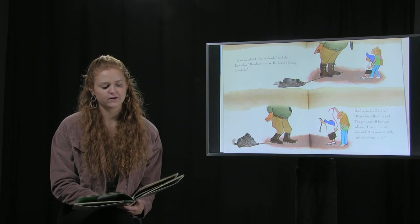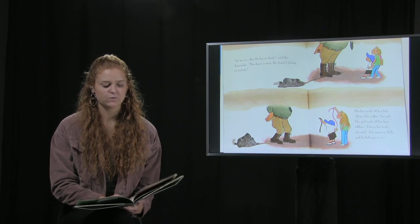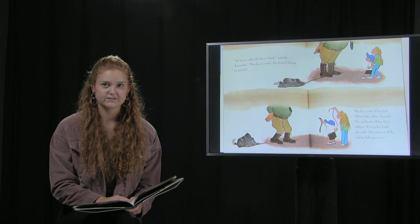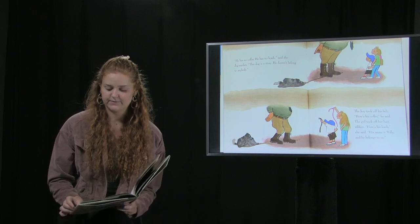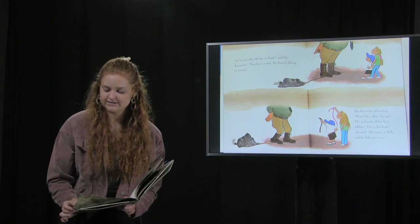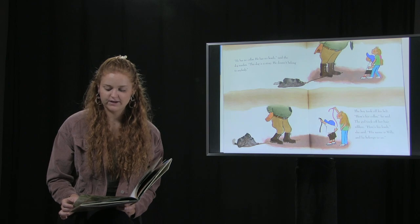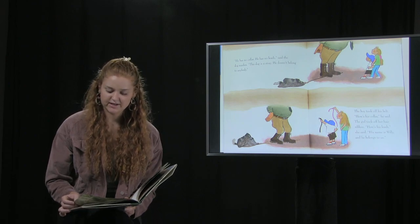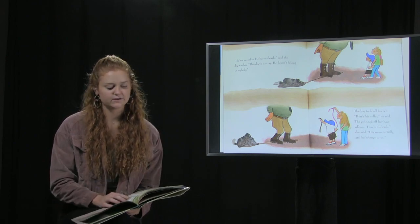He has no collar. He has no leash, said the dog warden. This dog is a stray. He doesn't belong to anybody. The boy took off his belt. Here's his collar, he said. The girl took off her hair ribbon. Here's his leash, she said. His name is Willie, and he belongs to us.